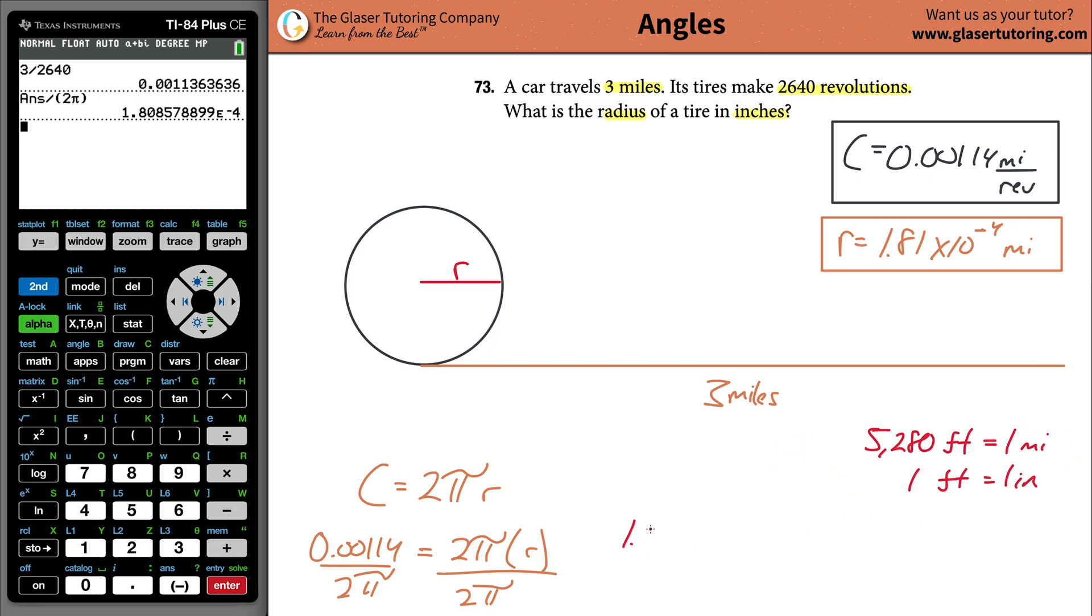So we're going to take our 1.81 times 10 to the minus 4th miles that we found. When you do your conversion, whatever unit you want to cancel goes on the bottom. I don't know how many inches there are in a mile. If you do, you can do this in one step. But I don't, so I cannot do it in one step. I do know how many feet are in a mile. Therefore, I'm going to go from miles to feet first.